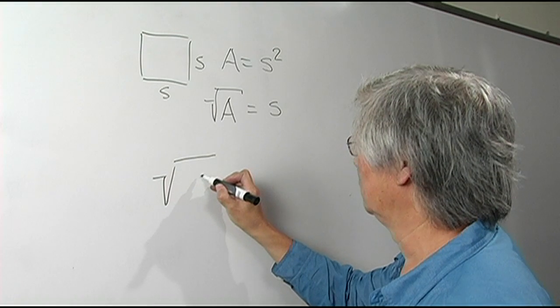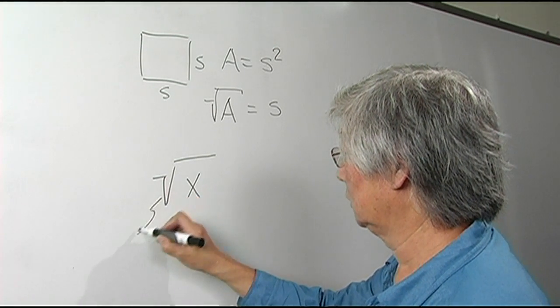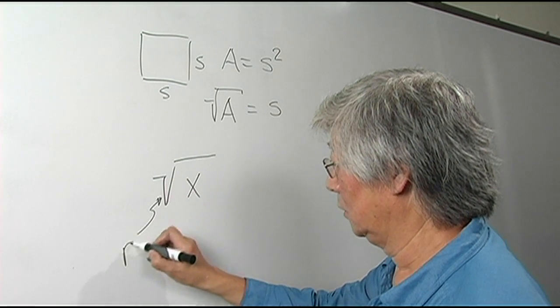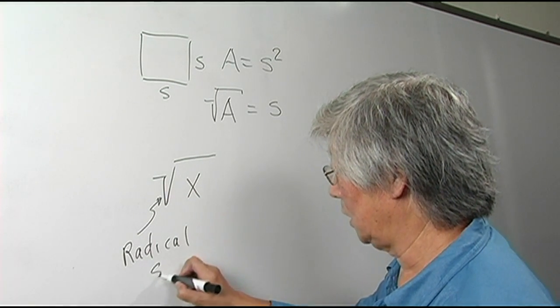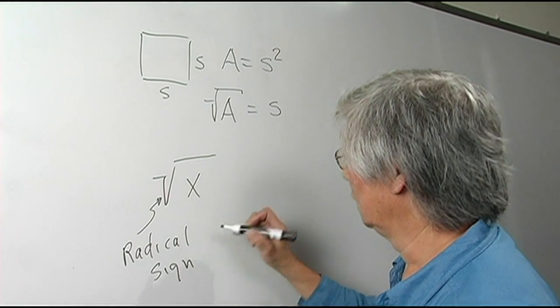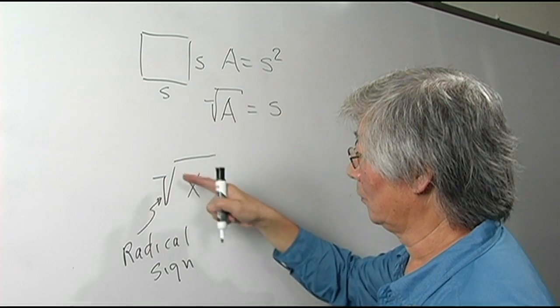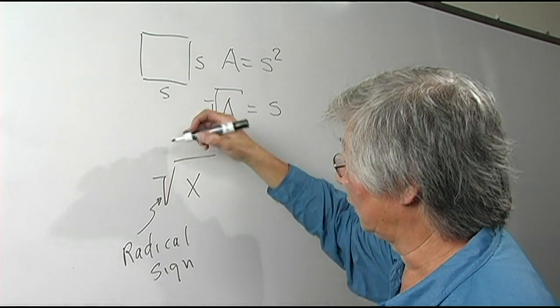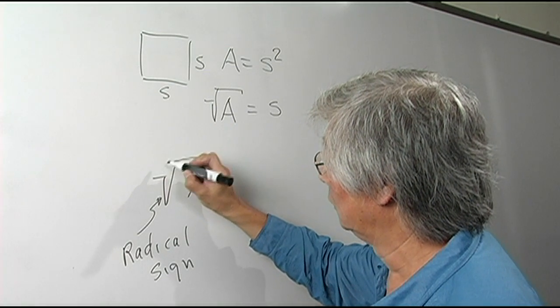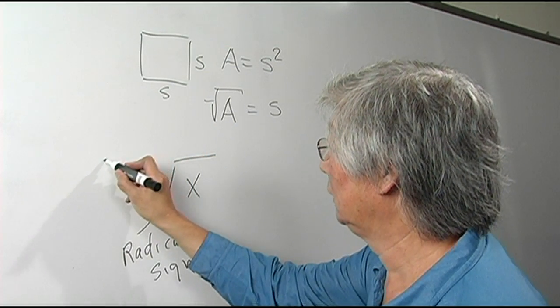Let me use a symbol, let's call it X. This is called the radical sign. When it's only square, when the power is two, we don't have to put a number here, but usually there's a number. And this number is called the index.